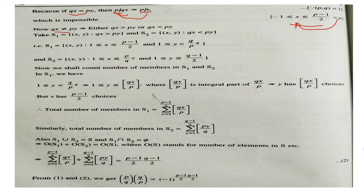Since qx ≠ py, every pair falls into exactly one of two cases: either qx > py or qx < py. We define set S1 as the subset where qx > py, and set S2 as the subset where qx < py. In S1, x runs from 1 to (p−1)/2 and y < qx/p. In S2, x runs from 1 to (p−1)/2 and y runs from 1 to (q−1)/2.